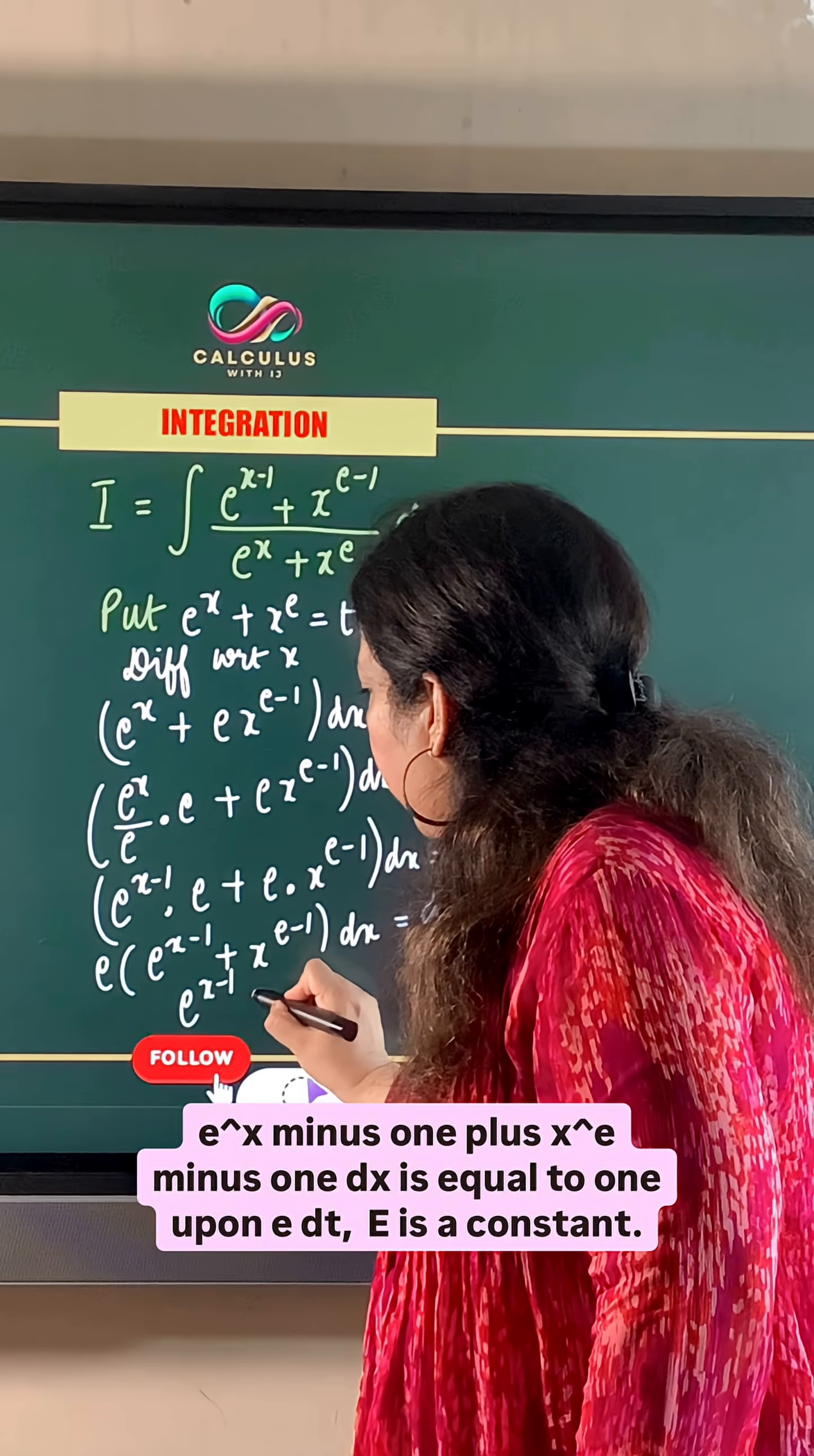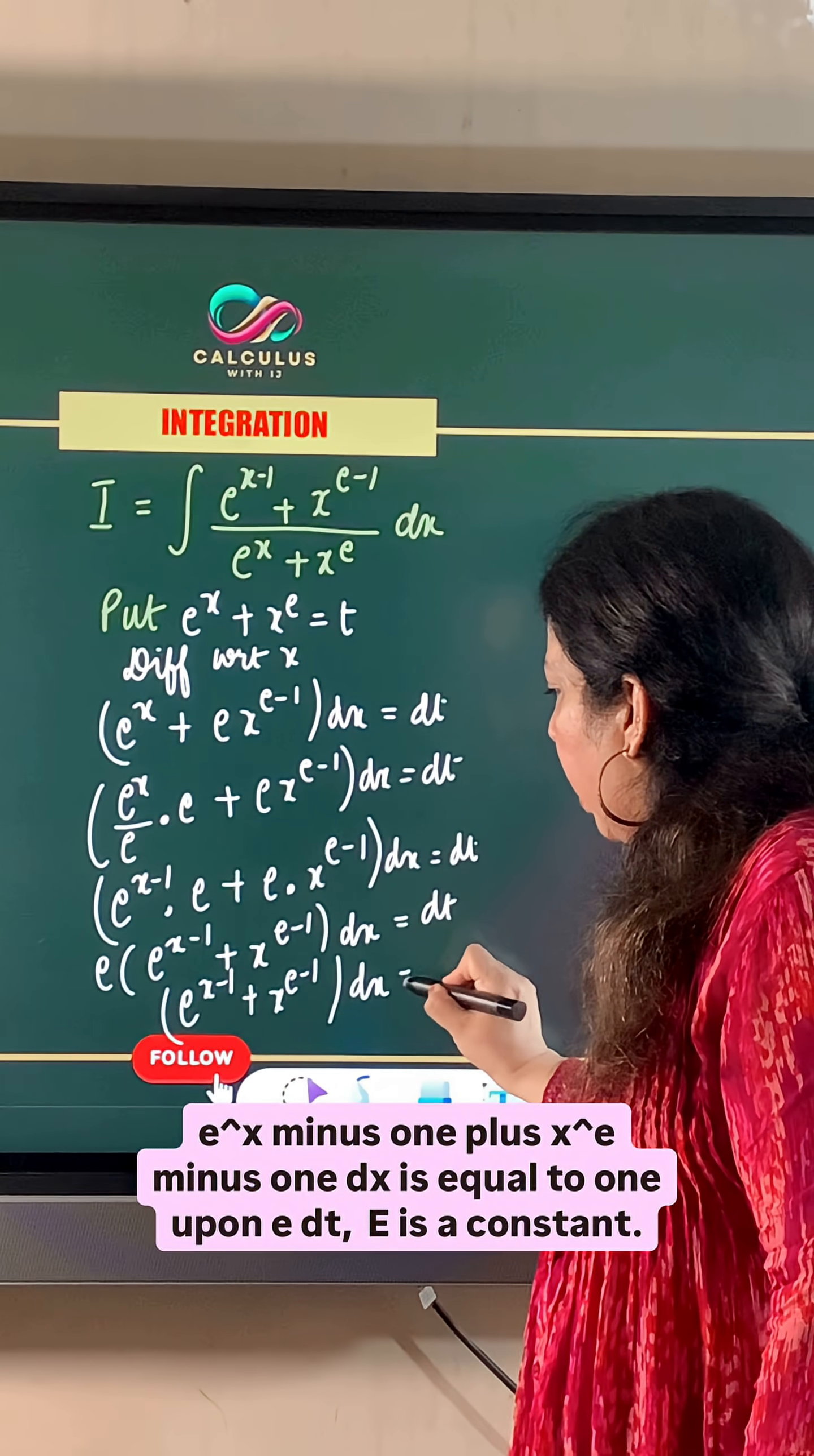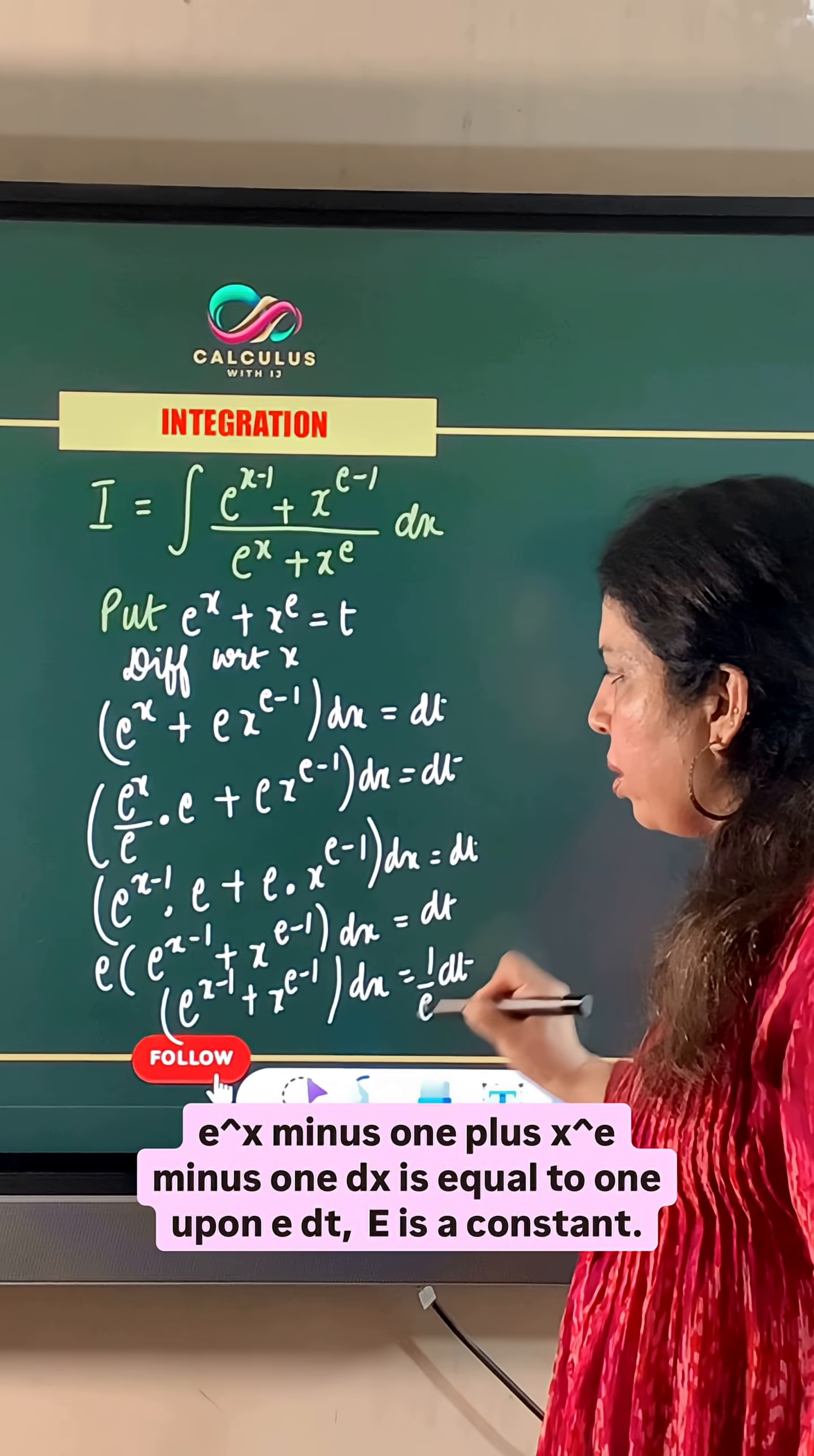So e raised to x minus 1 plus x raised to power e minus 1 dx is equal to 1 upon e dt. e is a constant.